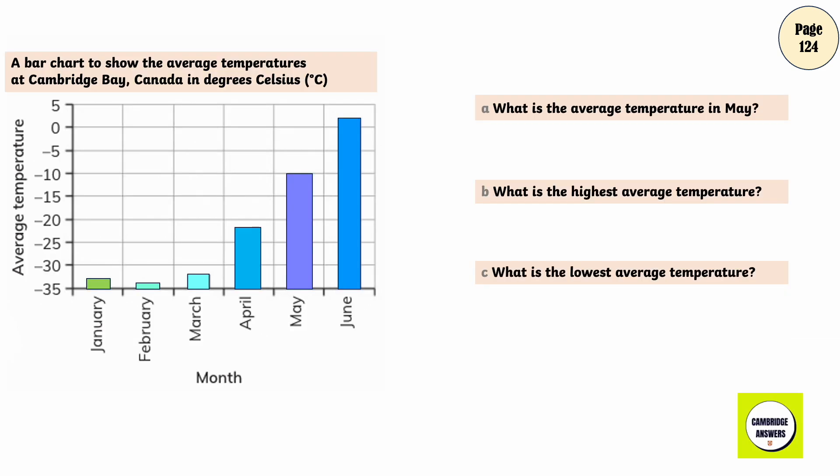A bar chart to show the average temperatures at Cambridge Bay, Canada in degrees Celsius. What is the average temperature in May? Minus 10 degrees Celsius. What is the highest average temperature? 2 degrees Celsius. What is the lowest average temperature? Minus 34 degrees Celsius.